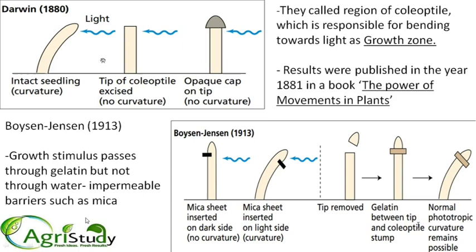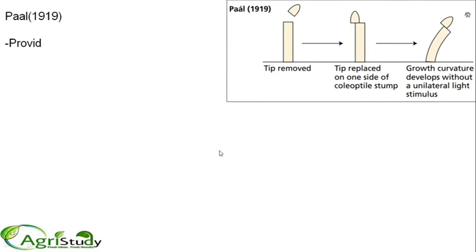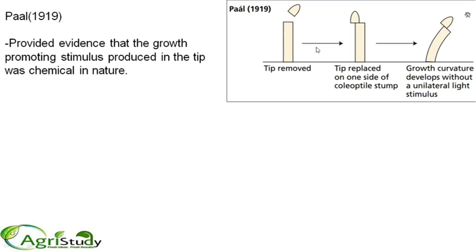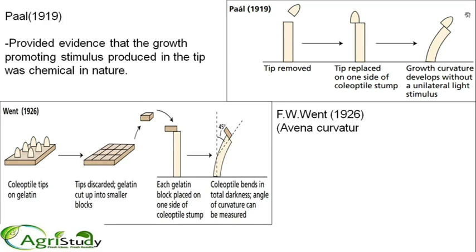Next is another scientist — Paal, in 1919. He removed the tip, placed it asymmetrically, and observed bending, providing evidence that the substance involved is chemical in nature. That chemical nature of the growth stimulus was established by Paal. The next important person is F.W. Went, in 1926, and his work is called the Avena Curvature Test.